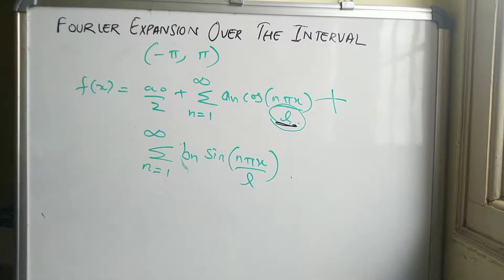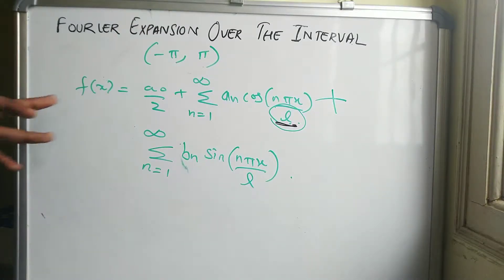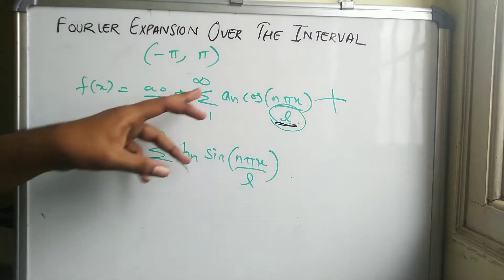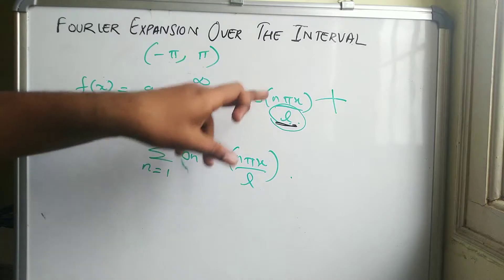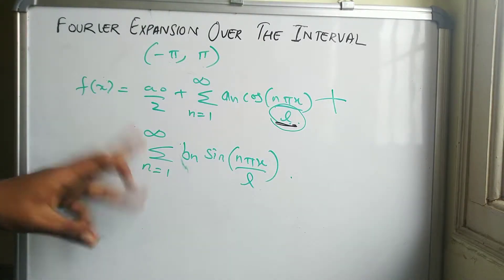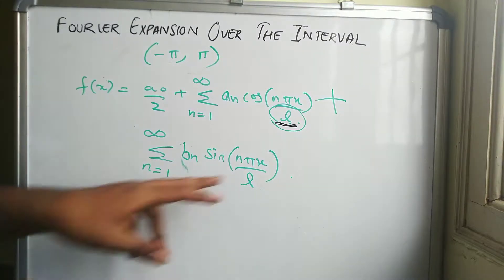In this video we will be discussing the Fourier expansion over the interval minus pi to pi. We know that the general expansion of a Fourier series is given by f(x) = a₀/2 plus summation of n equal to 1 to infinity of aₙ cos(nπx/l) plus summation of n equal to 1 to infinity of bₙ sin(nπx/l).